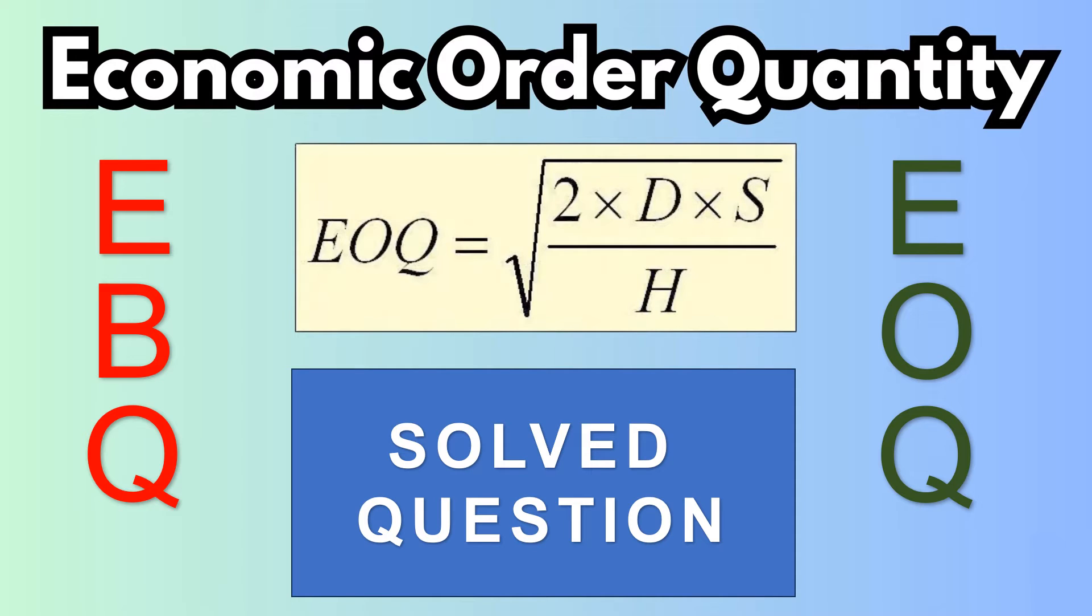Economic Order Quantity or Economic Batch Quantity is the ideal quantity of units a company should purchase to meet demand while minimizing inventory costs such as holding costs, shortage costs, and order costs.